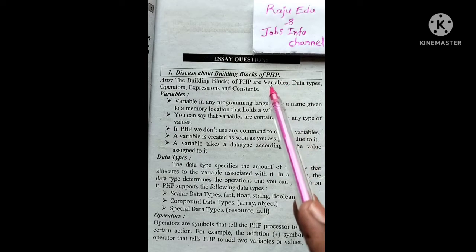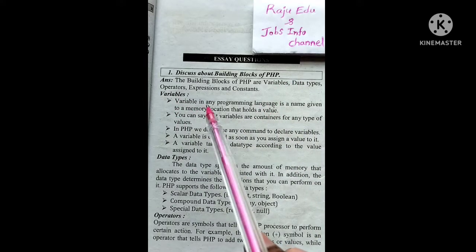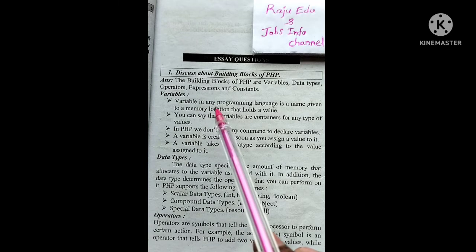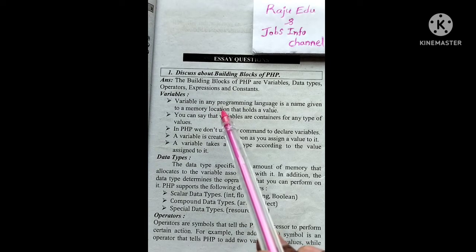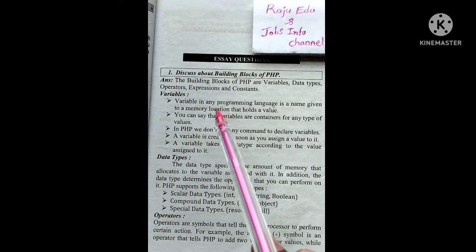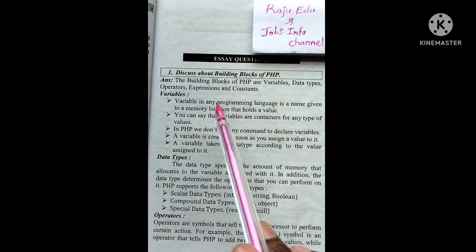The building blocks include variables, data types, operators, expressions, and constants. These five are known as the basic building blocks of PHP. First, variables. As we discussed in the previous class, a variable is used to store a value - simply a storage container.